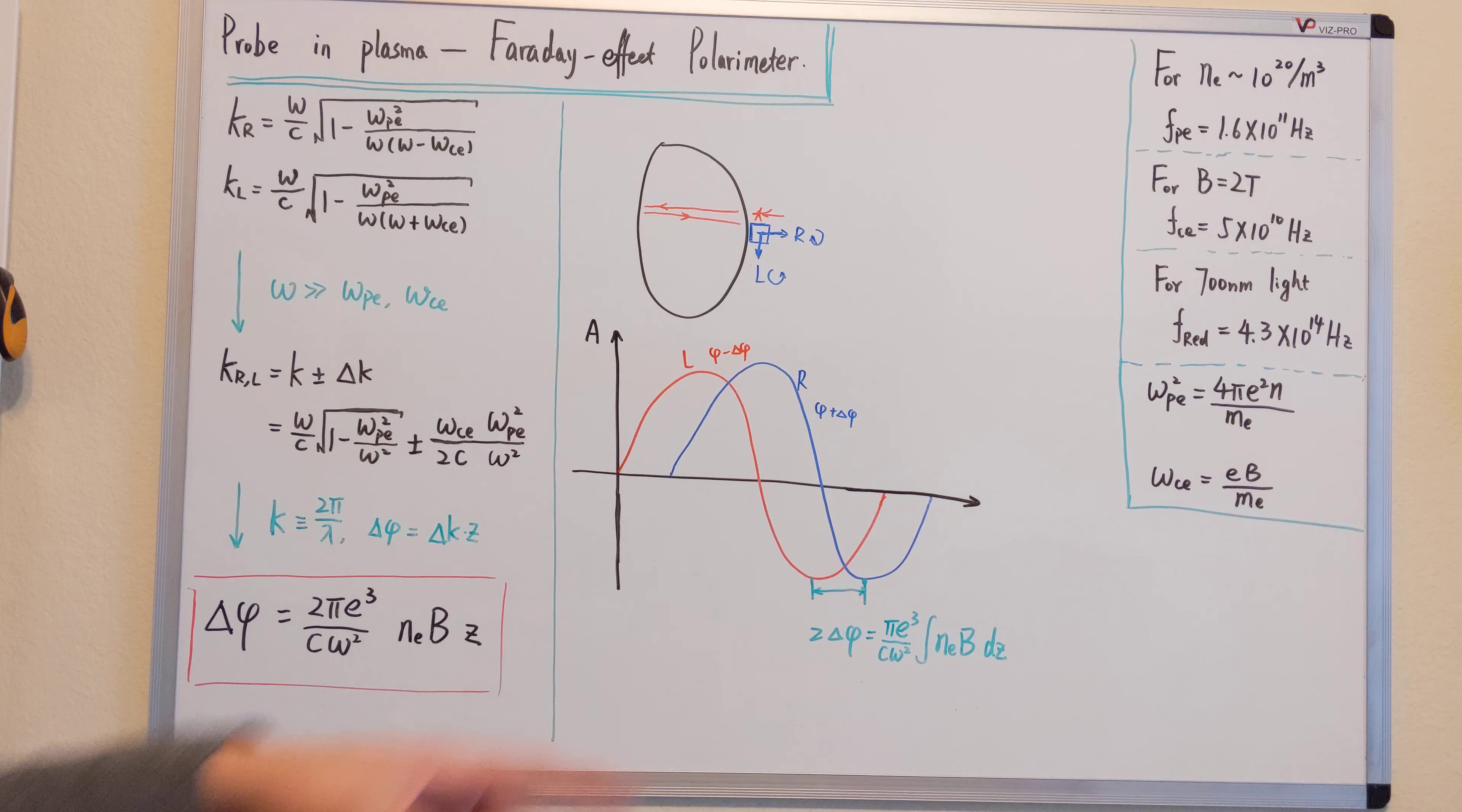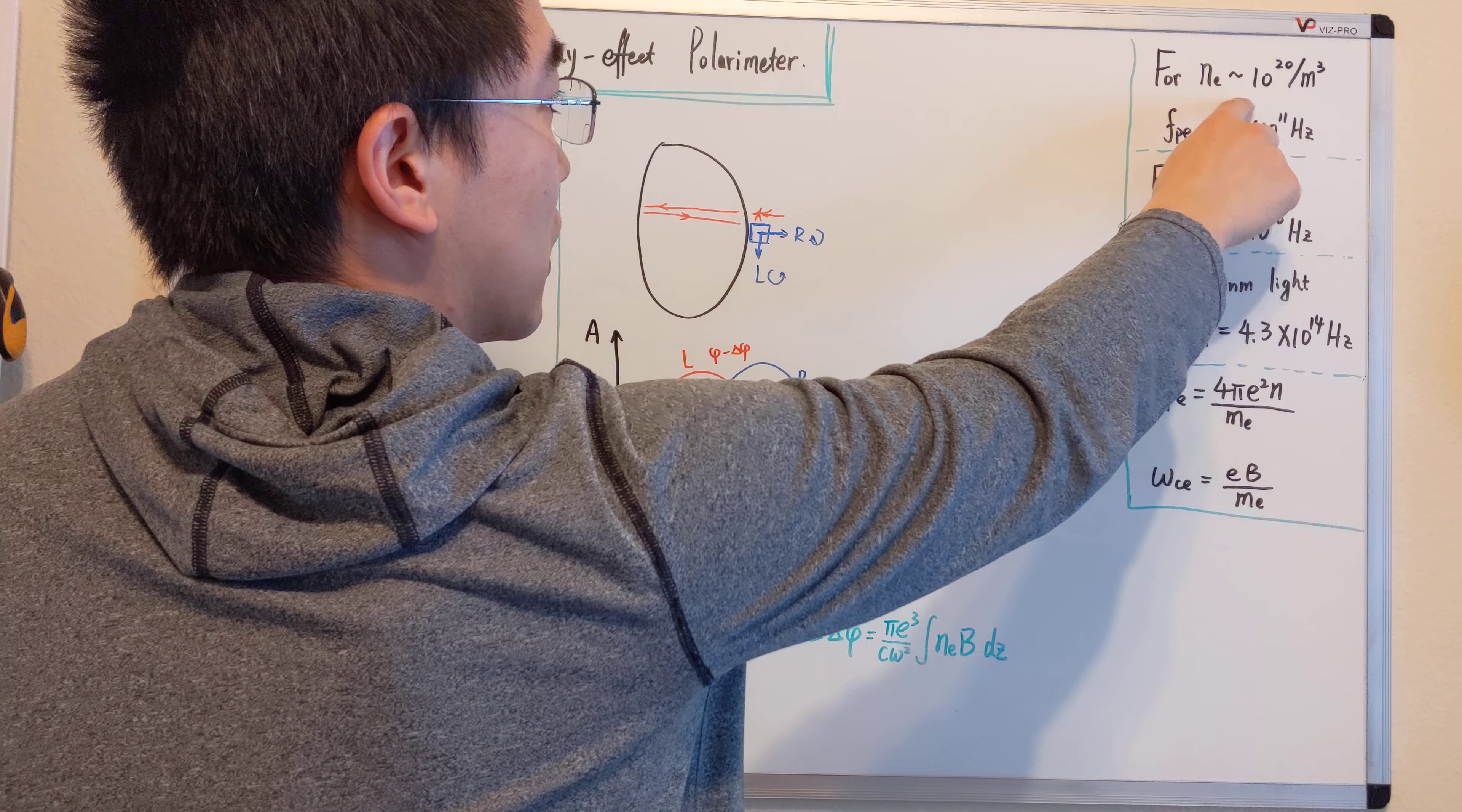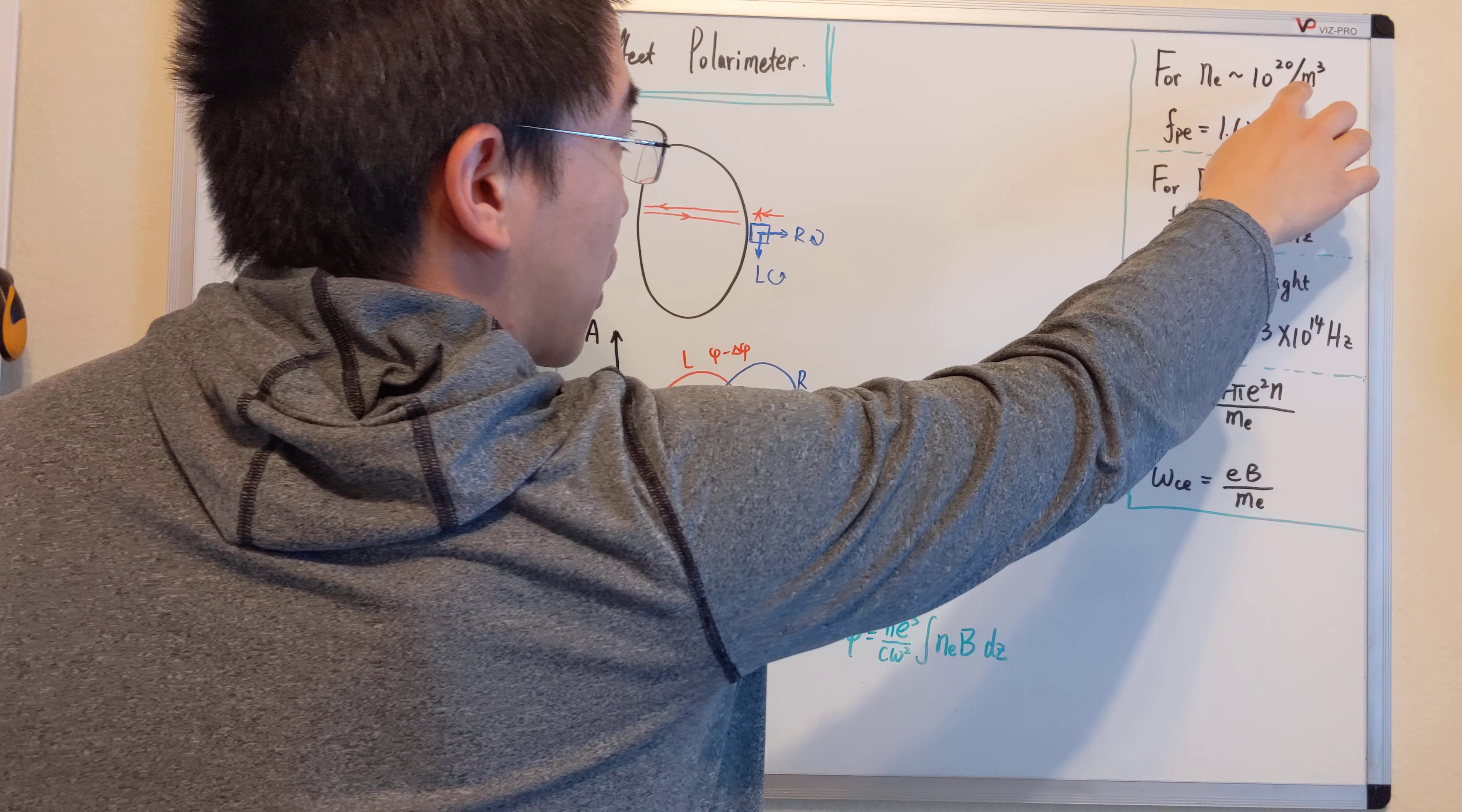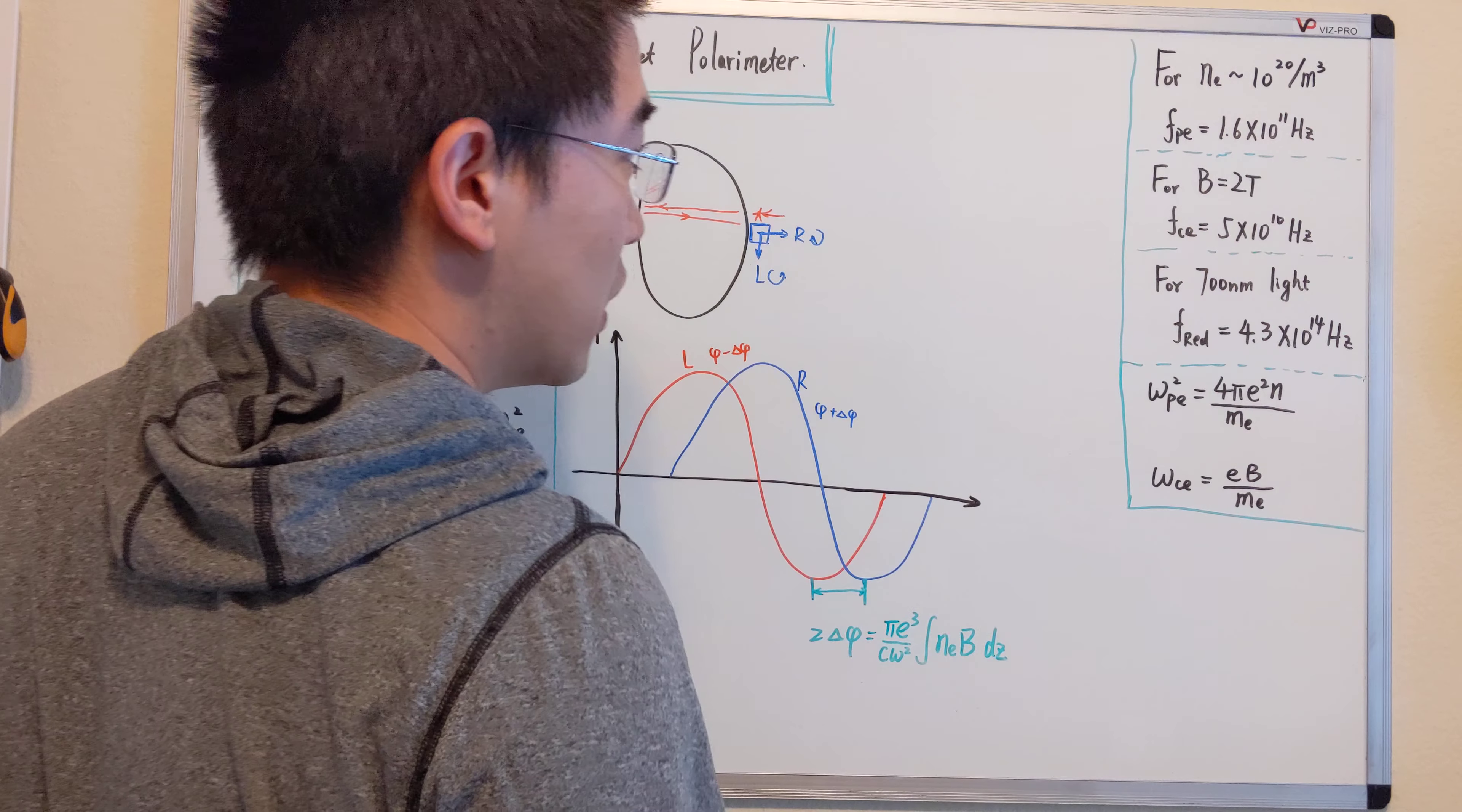For our scenario, I take the current D3D fusion device. In the pedestal region, we have around 10 to the 20 particles per cubic meter. That corresponds to the plasma frequency of 1.6 times 10 to the 11 Hertz.